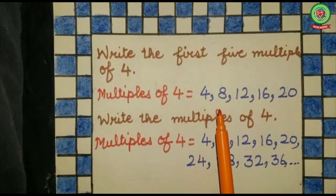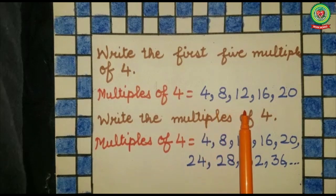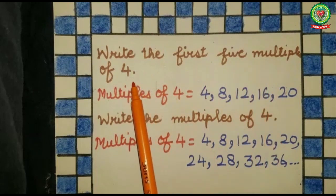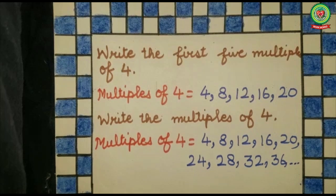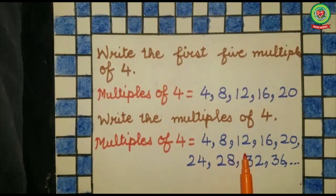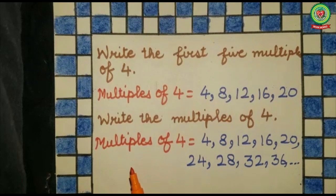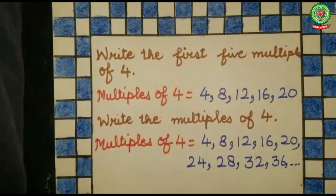So four, eight, twelve, sixteen, and twenty are the first five multiples of four. Now if I ask you to tell me the multiples of four without specifying how many, your answer will be: four, eight, twelve, sixteen, twenty, twenty-four, twenty-eight, thirty-two, thirty-six, and so on. These dots indicate that they are endless — multiples of any number are endless.